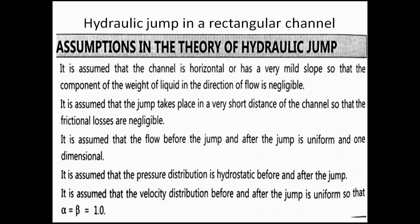It is also assumed that pressure distribution is hydrostatic before and after the jump. Hydrostatic pressure distribution is triangular in nature, because as depth increases, the intensity of pressure also increases. It is further assumed that the velocity distribution before and after the jump is uniform, so that alpha (energy correction factor) and beta (momentum correction factor) are both equal to one.